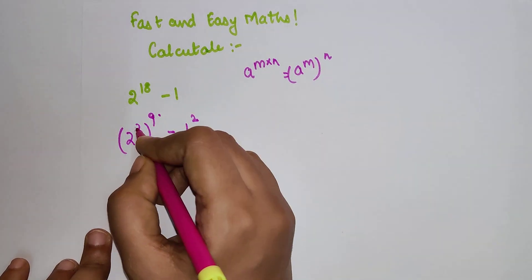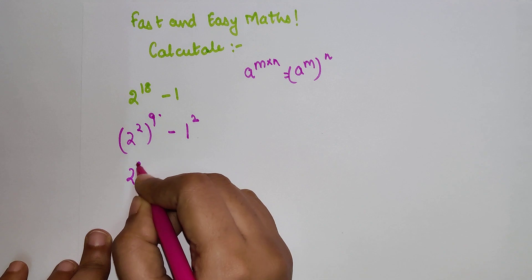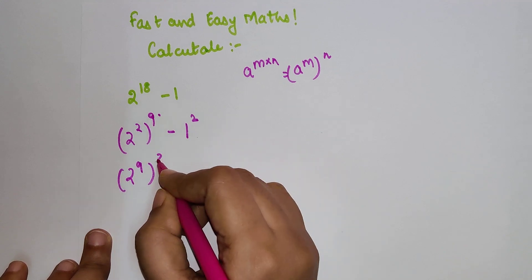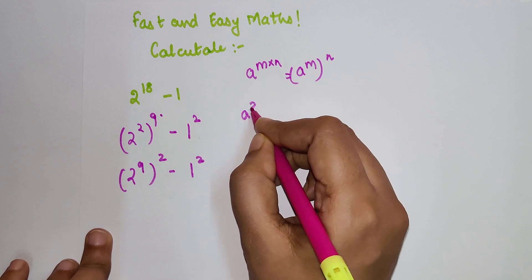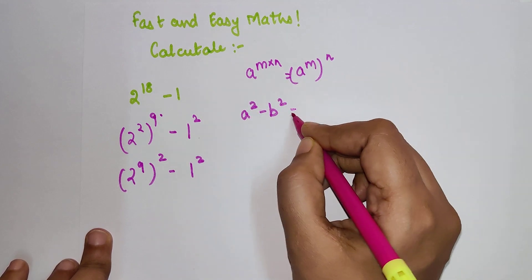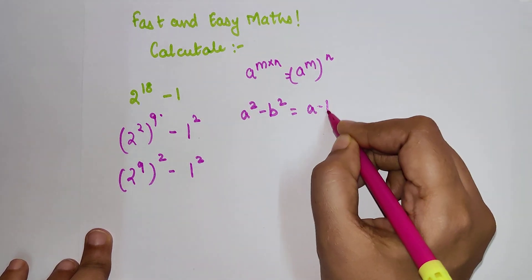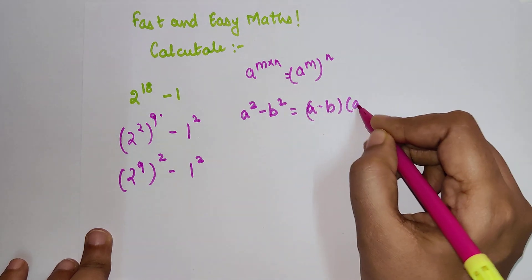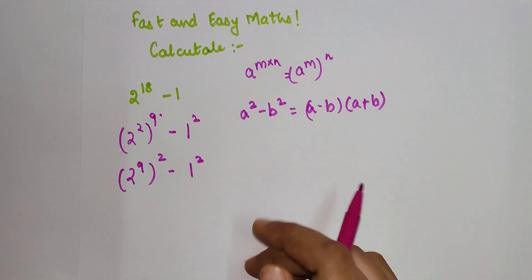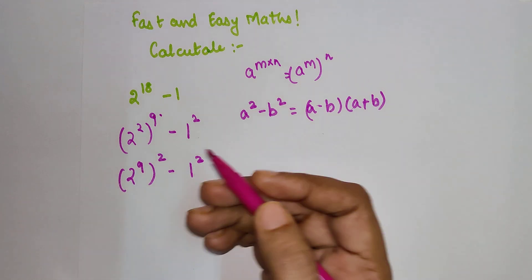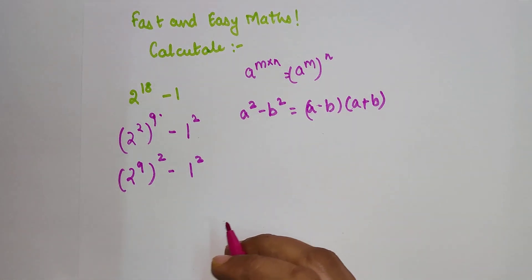So here, instead of writing this, I can convert this as nothing but (2^9)^2 - 1^2. And I know that a^2 - b^2 can be written as (a-b)(a+b). Correct. So here what we have to do is calculate 2^9.